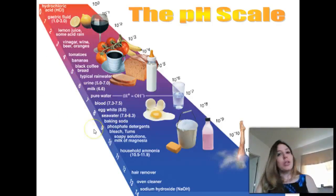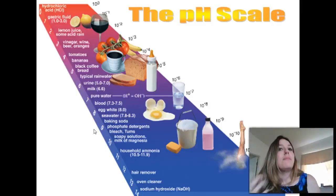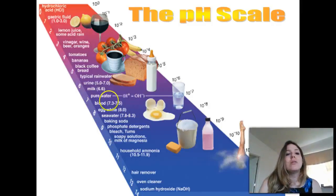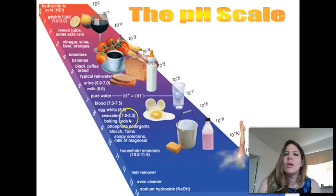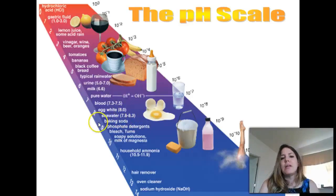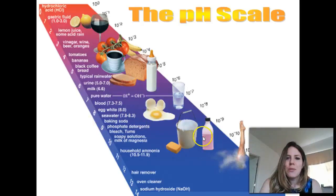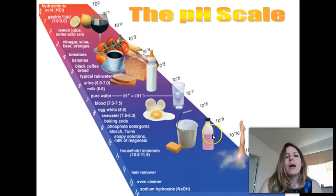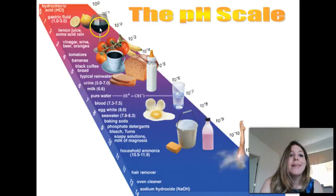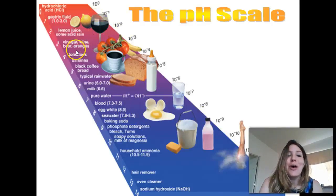But the water you find in the ocean is the other way around. It's slightly basic because of all the salts in it. Ocean water, seawater, usually around 8, 8.2, 8.3, maybe as low as 7.8, but it tends to be rather basic. Other things—here's our Pepto-Bismol with a pH of around 10 or 9. You have even eggs—the whites of your eggs are basic at about 8. Wine is down around 3-ish or so.